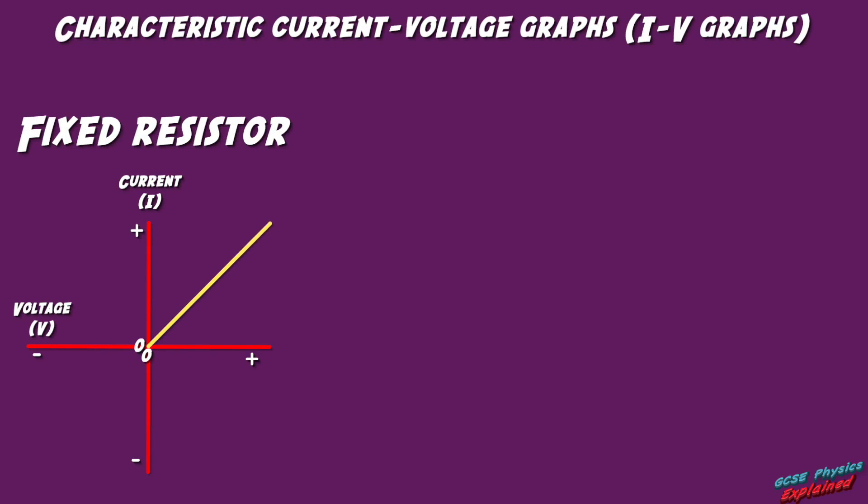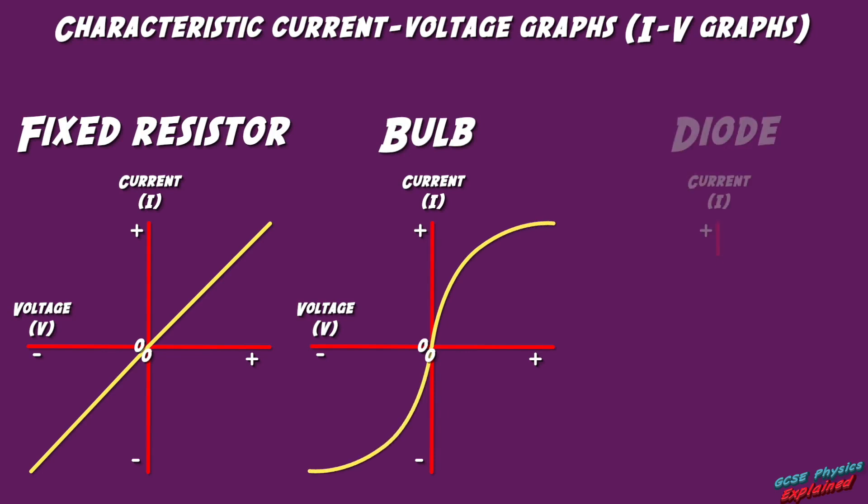The current voltage graphs for a fixed resistor, otherwise known as an ohmic resistor because it obeys Ohm's law. The current voltage graph for a bulb, also known as a filament lamp, and the current voltage graph for a diode.